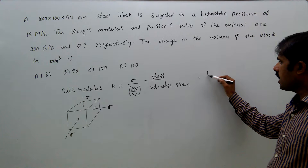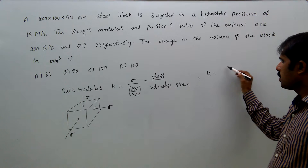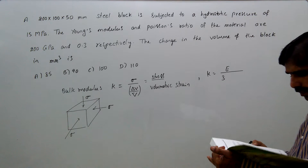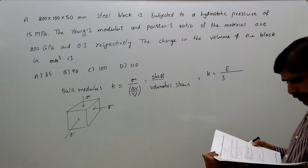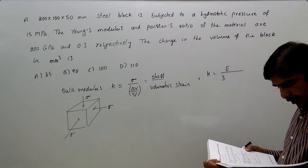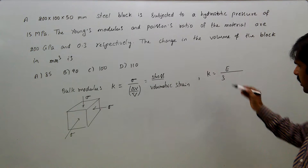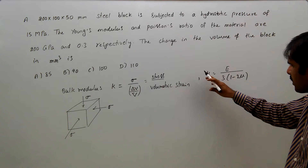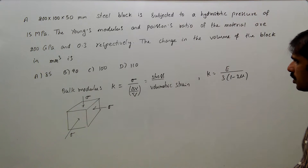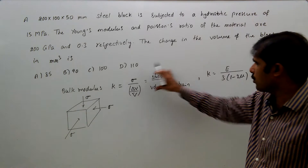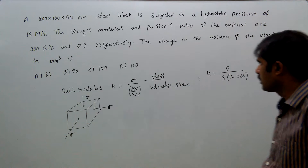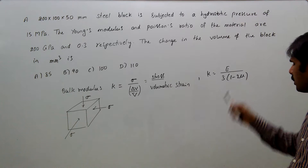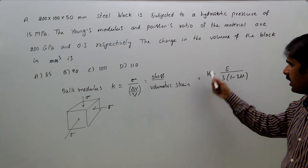The relation between K and E is: K equals E divided by 3 into (1 minus 2μ). These two things — the bulk modulus definition and this K-E relation — if you know them, you can solve this problem. Since we have E and μ, we can find K first.